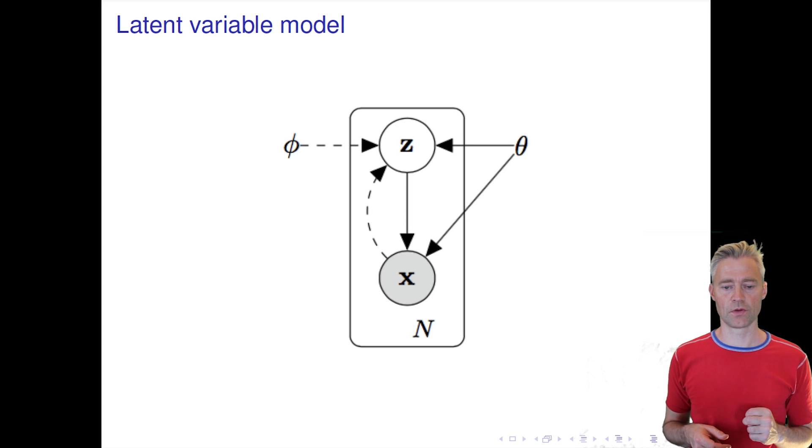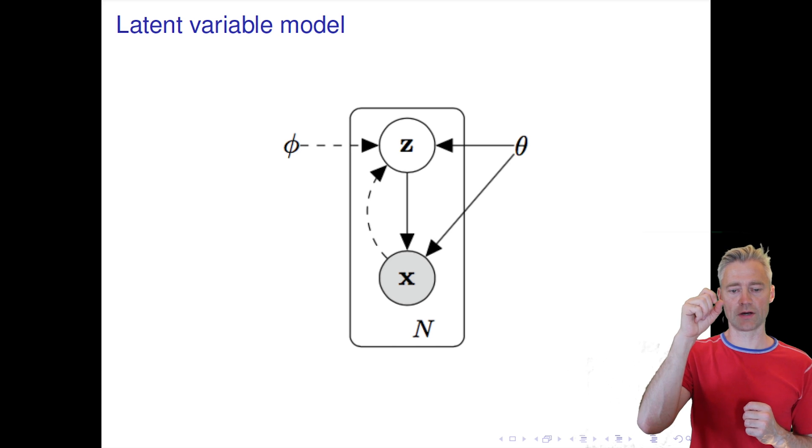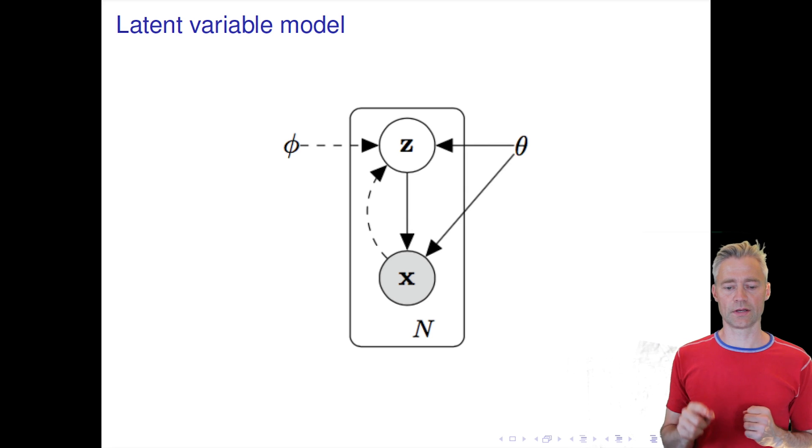So the arrow going down is the decoder - it's the way to take our latent representation and generate x again. And the line going upwards, dashed line, is the encoder, that's the mapping from the input data to the latent representation. And in the probabilistic framework, then both of these mappings are conditional probability distributions. Then we have phi and theta - those are the parameters we use in the decoder and the encoder.